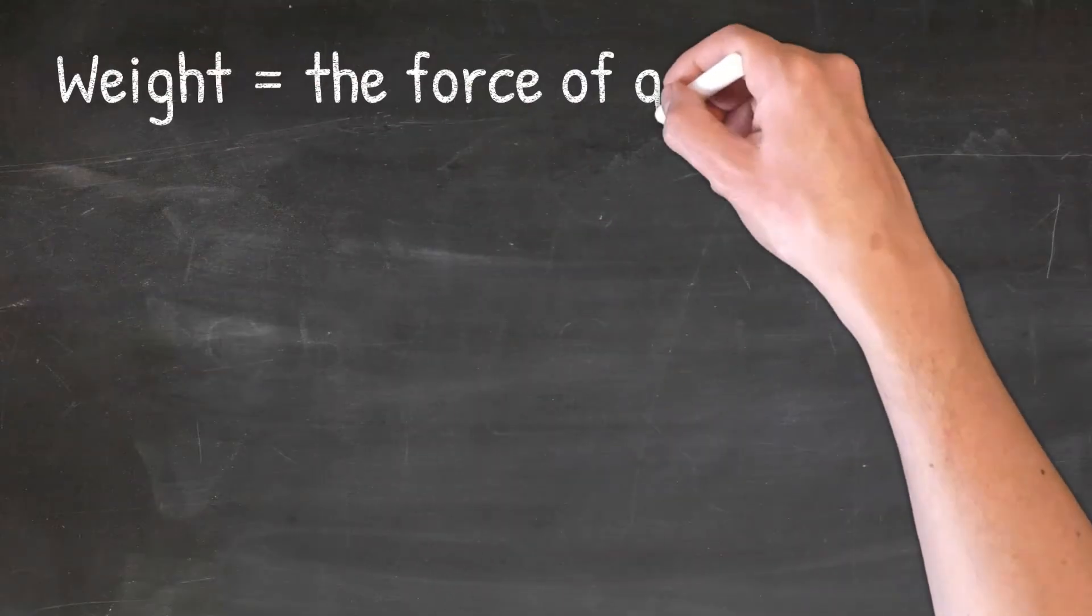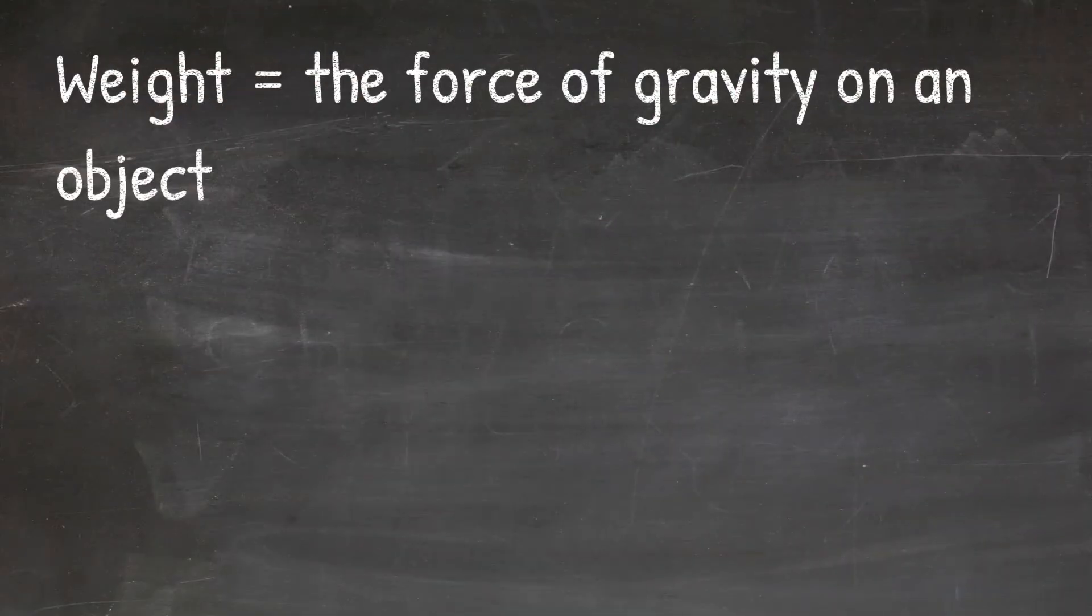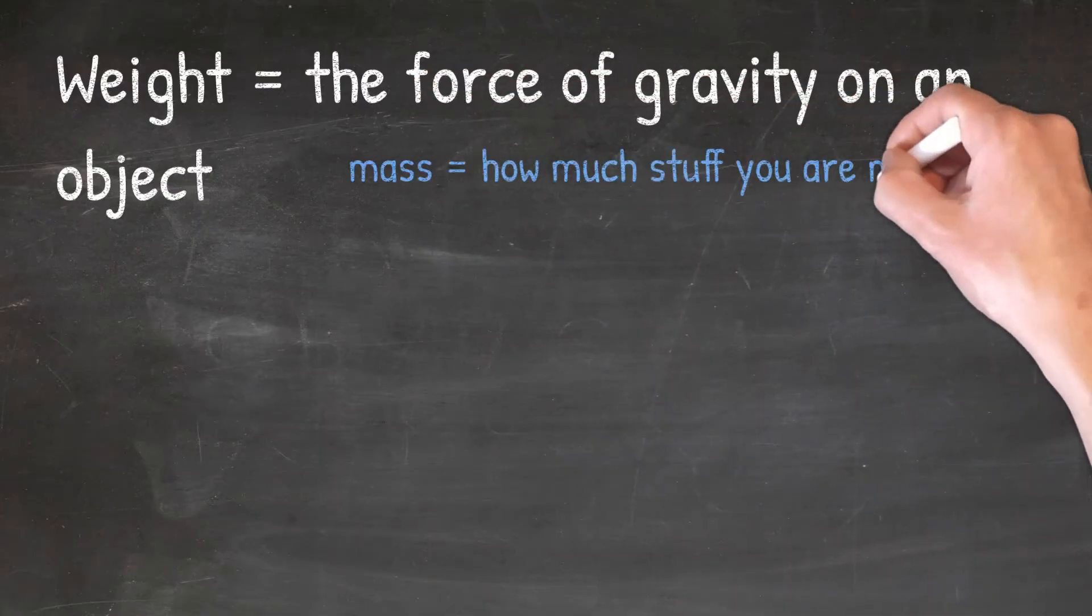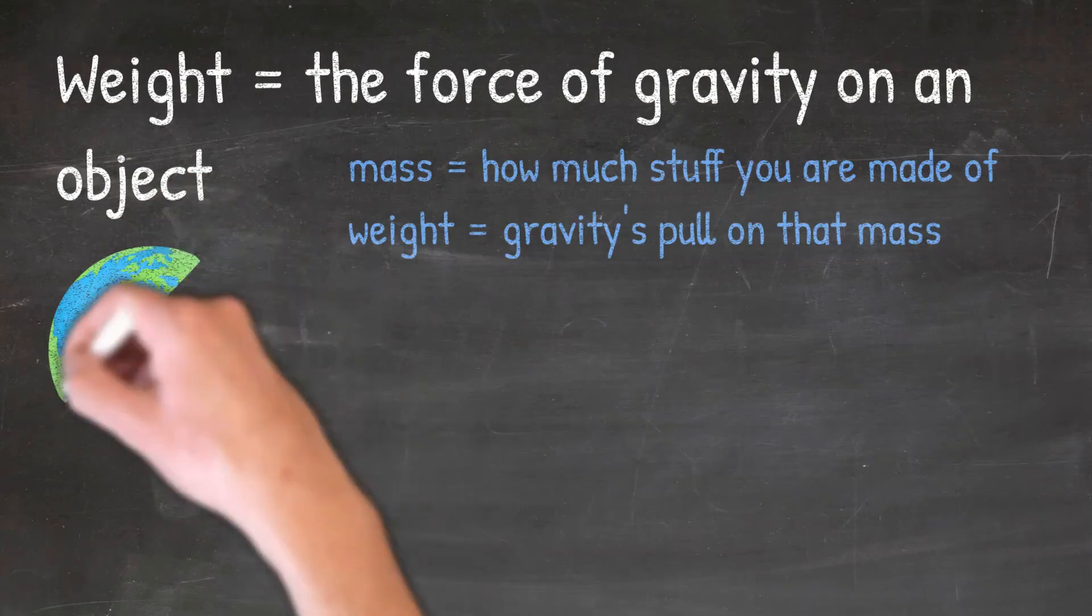The weight of an object is simply the force of gravity on that object. This is different from the mass. The mass of an object is just the amount of matter in that object. You can think of mass as being how much stuff an object is made up of, and weight is gravity's pull on that mass.